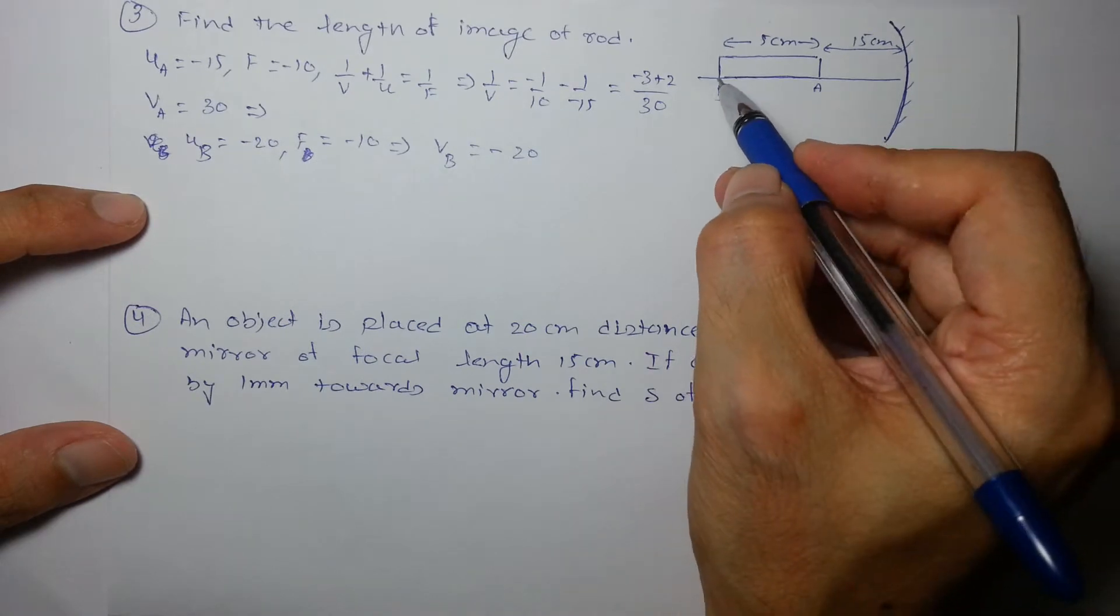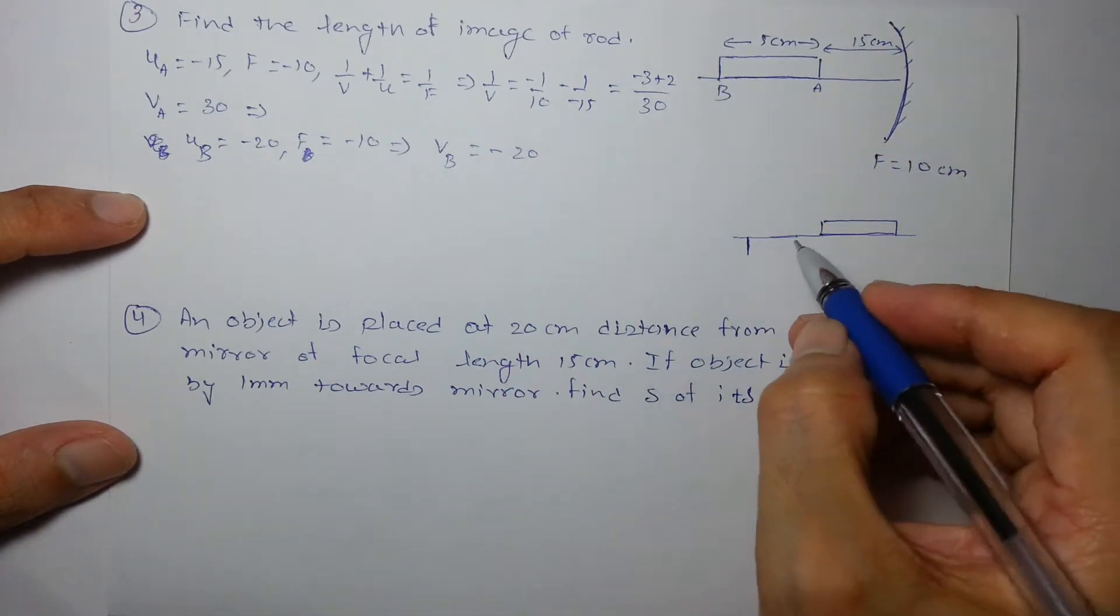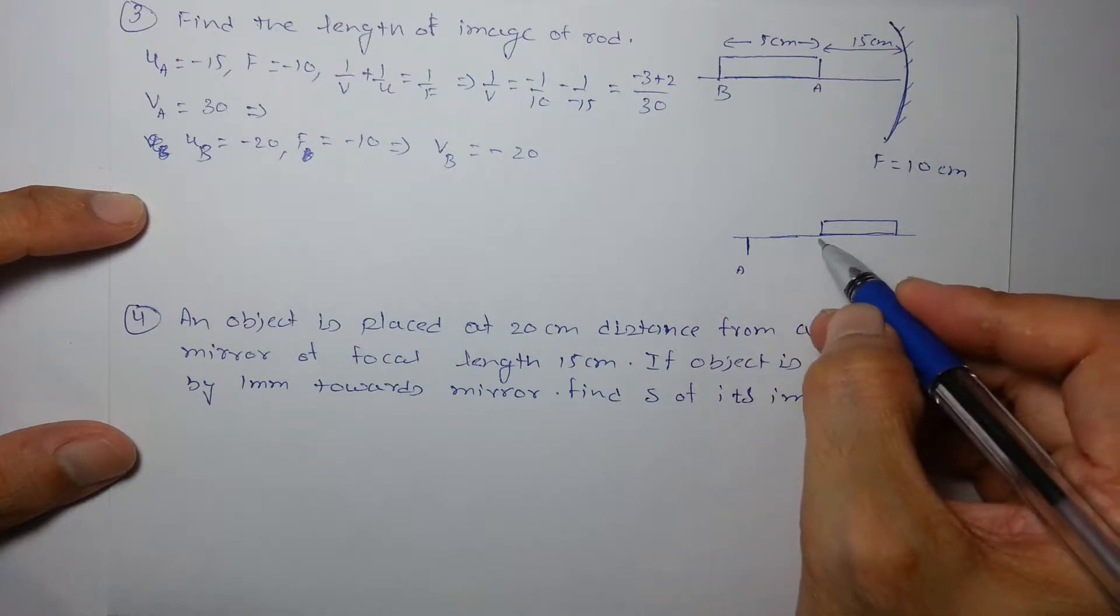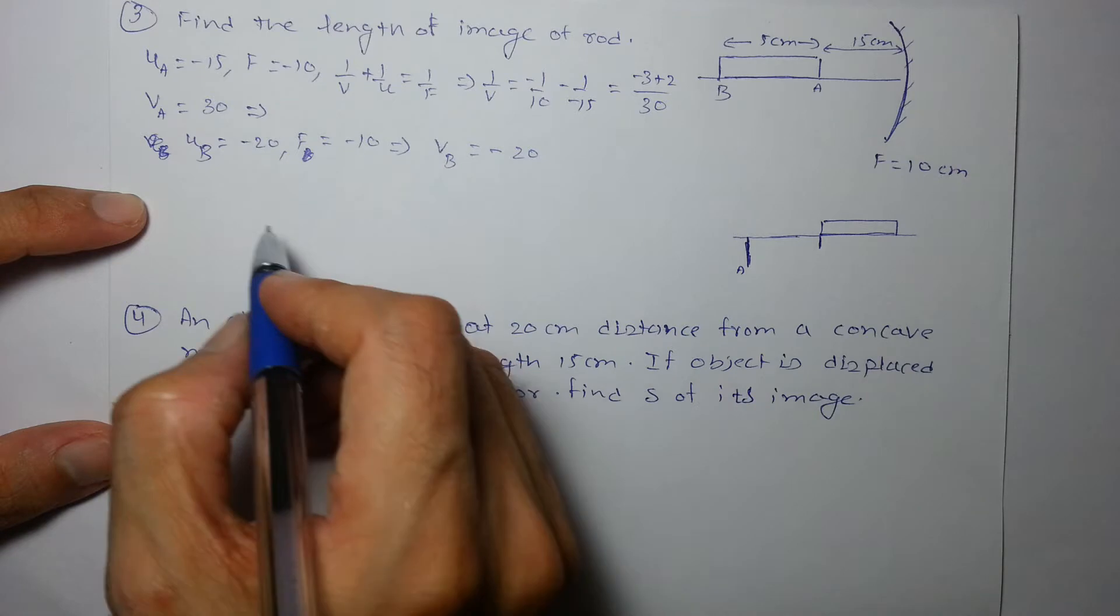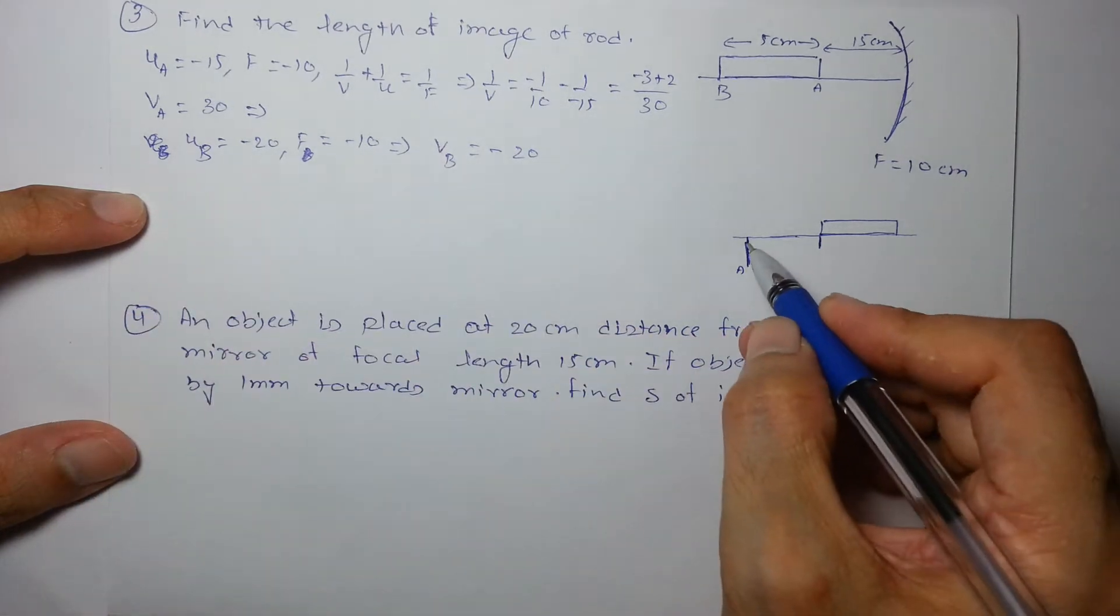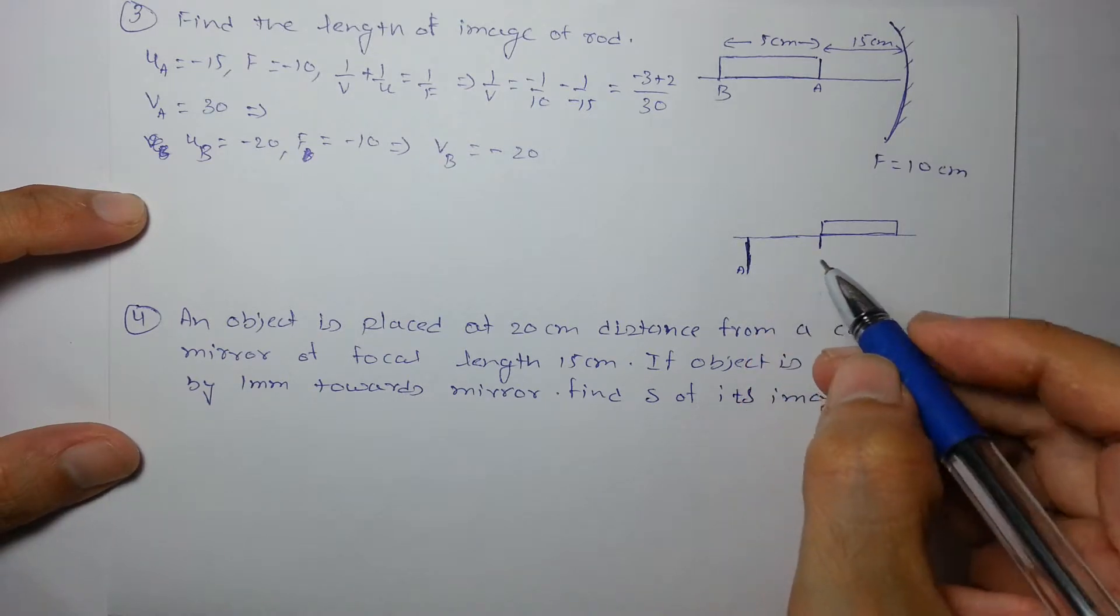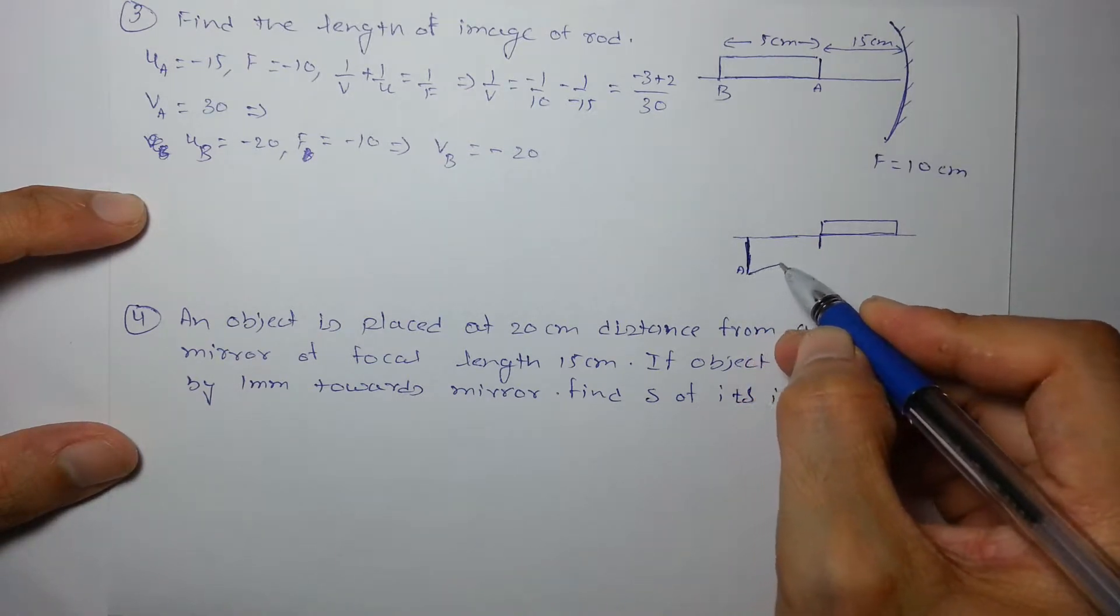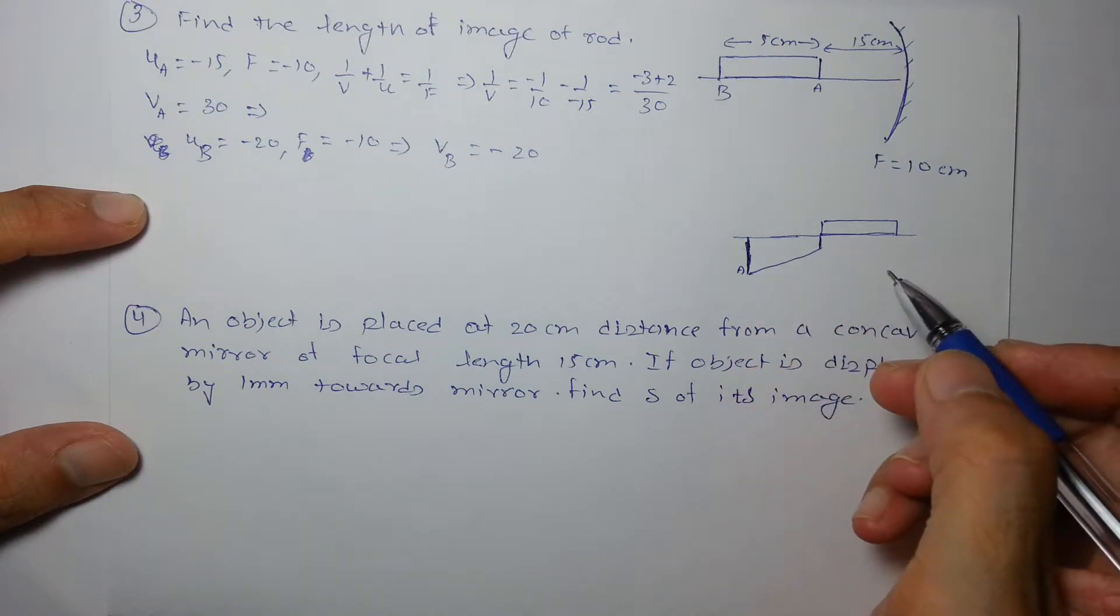Because it's at the center of curvature, so B will be like this. But since magnification of A is more, A's height will be comparatively more. When you connect this, you'll see the rod in this shape.